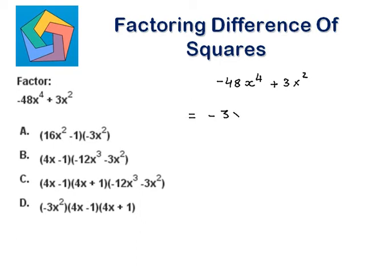Between x to the power 4 and x to the power 2, we can take out common x to the power 2. In the parenthesis we are left with: negative 48 divided by 3 is 16, and x to the power 4 divided by x to the power 2 is x squared. Then positive 3 divided by 3 is 1, and x squared divided by x squared is 1.